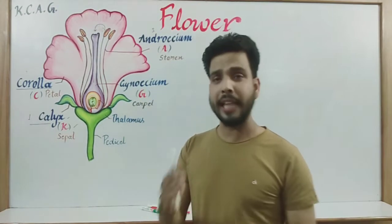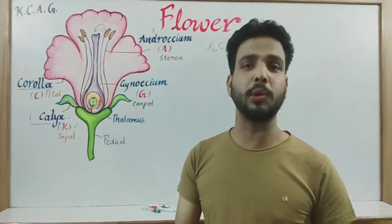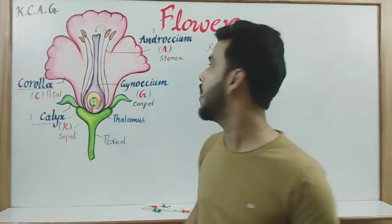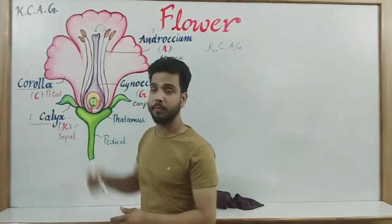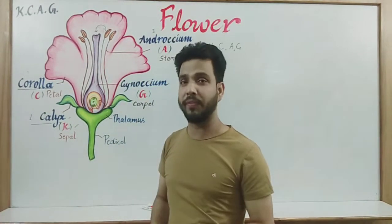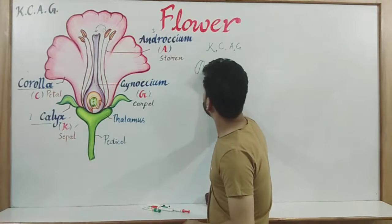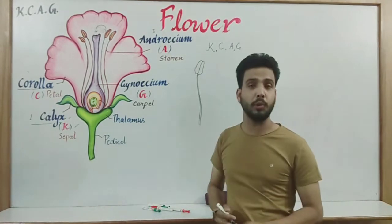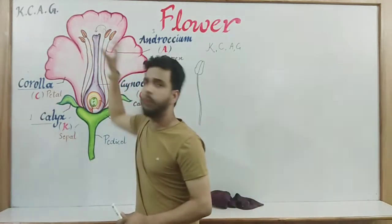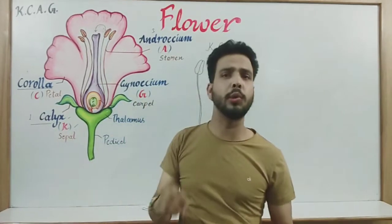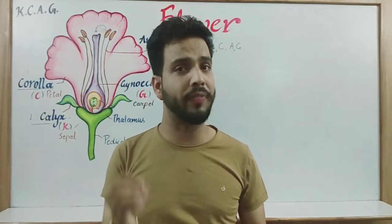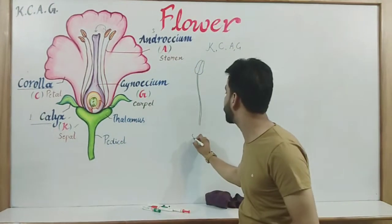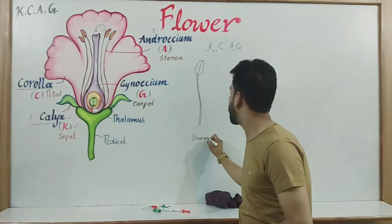After calyx and corolla, the next whorl of the flower is known as androecium. Androecium is the male part of the flower. In the diagram you can see there are 4 androecia collectively. A single unit of androecium is known as stamen. This is a single stamen.